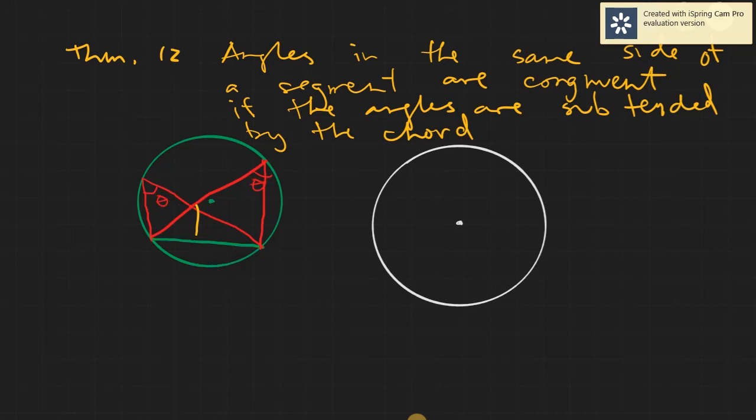And why am I emphasizing if they are subtended? Because you can also have an angle here, which is a central angle. So maybe we can say basically is that all inscribed angles on the same side of the segment are congruent.